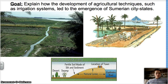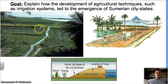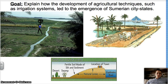So how did the development of agricultural techniques lead to the emergence of Sumerian city-states? Well, this is an irrigation system. It works great unless the person upstream is not taking care of their business. What's happening here is there's a little bit of silt buildup in the stream.